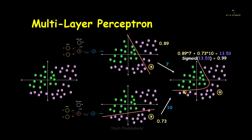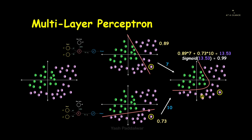So we combined the two classifiers by calculating the weighted sum of their outputs with the assigned weights, then applied the sigmoid function to get the final output of 0.99. This shows how we can mathematically combine more than one perceptron to create a multi-layer perceptron algorithm that separates non-linear data.